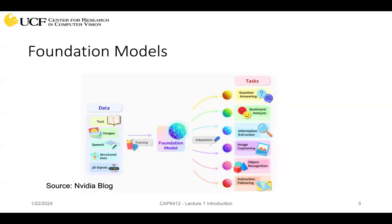Here's an example from the NVIDIA blog. Your data — images, speech, 3D signals and all kinds of things — you do the training and go to the foundation model. Then you can fine-tune and adapt to a downstream task: question answering, sentiment analysis, image captioning, object recognition, instruction following, all those things. That's what foundation models do.